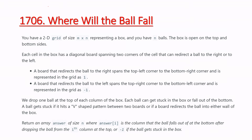Today we are going to learn a new question - LeetCode problem 1706 'Where Will the Ball Fall'. We have a 2D matrix of size m cross n representing a box, and we have n balls total.